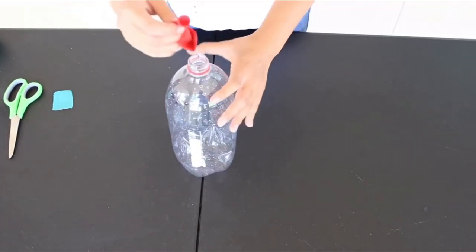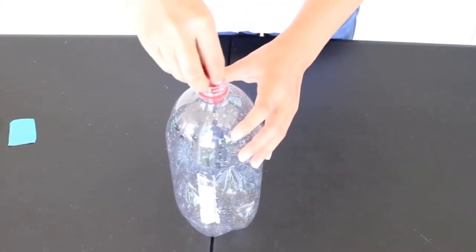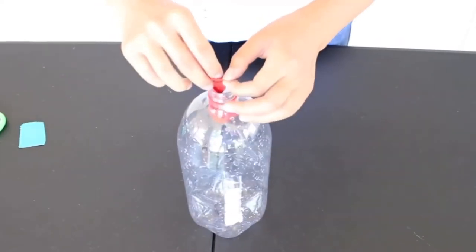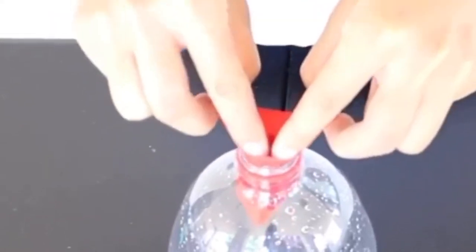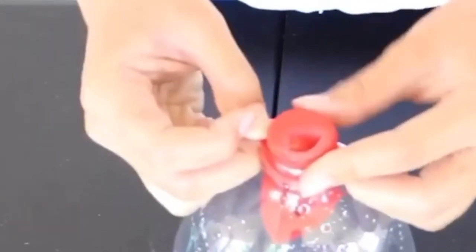It's now time to put your balloon inside your bottle. Make sure that there is no air in it for the moment. Next, you will have to open the mouth of your balloon and put it around the mouth of your bottle. This step might take a little bit of adjustment. It's okay, don't worry, take your time.